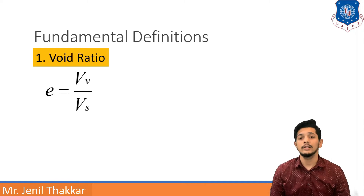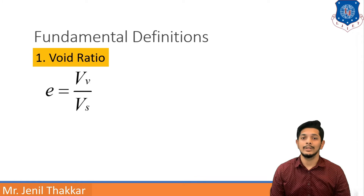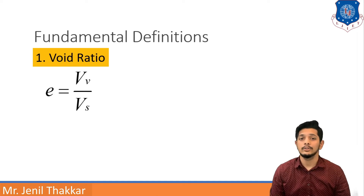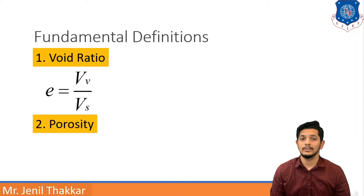Void Ratio generally lies in the range of 0 to 1 and is written as 0.4, 0.5, etc. Void Ratio is very useful as a basic unit. Let us move to the second fundamental definition, that is Porosity.